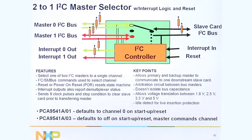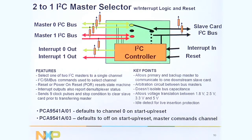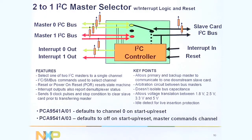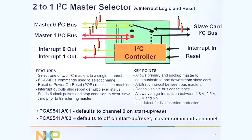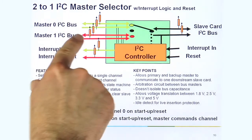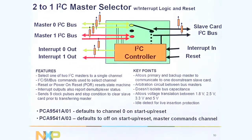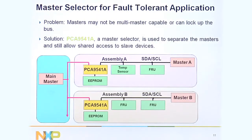The 2-to-1 master selector, the 2-to-1 DMUX, was designed for when you have two masters that are either multi-master capable or maybe not. Even if they are multi-master capable, maybe you don't want them on the same bus for redundancy or to prevent a bent pin or something like that causing problems. So you have two masters that want to go to the same device, and this device allows you to do that.